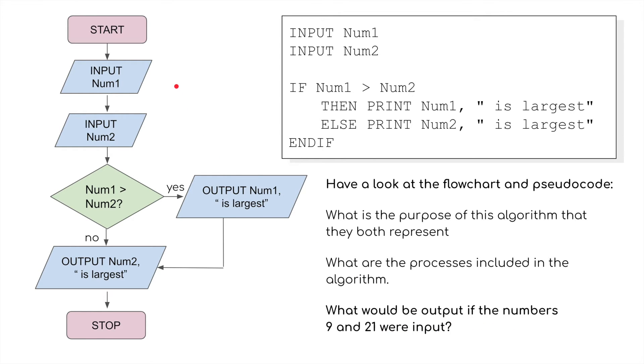In the flowchart we're going to start and input number 1 which would be 9. We're then going to input number 2 which would be 21. So the processes are input number 1, input number 2. So we've inputted number 9 and number 21. We're then going to see if number 1, number 9, is greater than or bigger than 21. If it is, it would output number 1 is largest. But in this case, number 2 is the largest, so no. So it outputs number 2 is the largest or it would have output 21 is the largest. And then the program would stop.